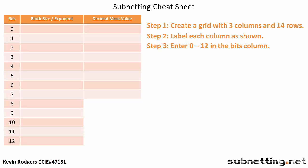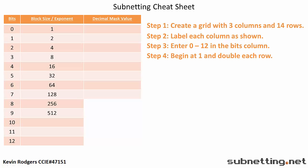For the Block Size Slash Exponent column, begin at 1 and double each row all the way down: 2, 4, 8, 16, 32, 64, 128, 256, 512, 1024, 2048, and 4096.